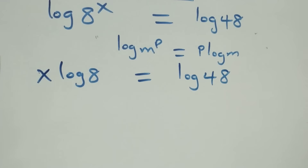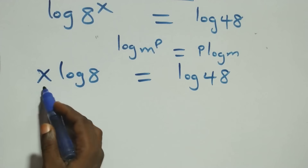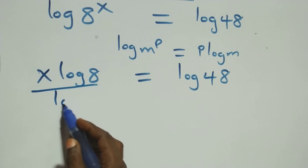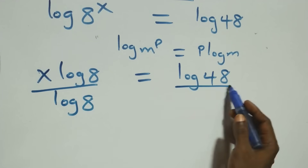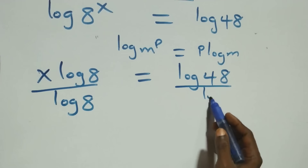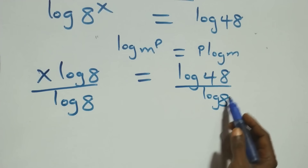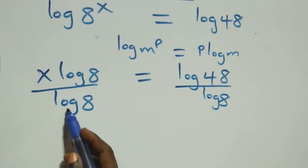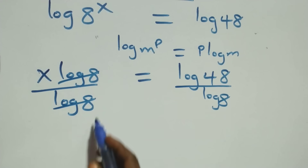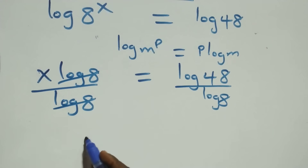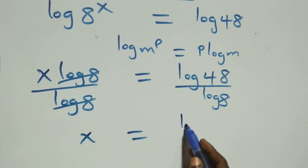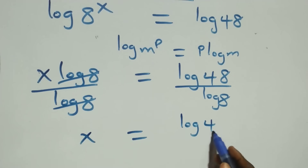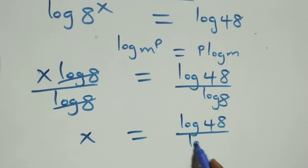The next step, we divide both sides by log 8. We divide this side by log 8, and also divide this side by log 8. Which implies here, log 8 cancels each other, and we are left with x, which is equals to log 48 over log 8.